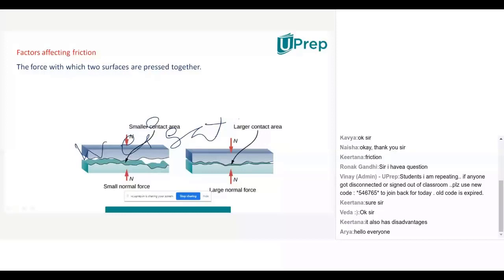So, if more weight is there, friction will be more. If less weight is there, frictional force will be less actually. So, instead of saying weight, what they said is, the force with which two surfaces are pressed together. See here, the force with which two surfaces are pressed together.